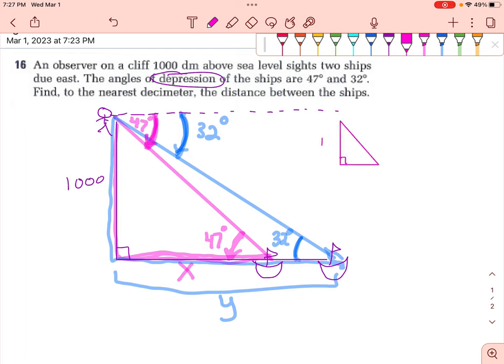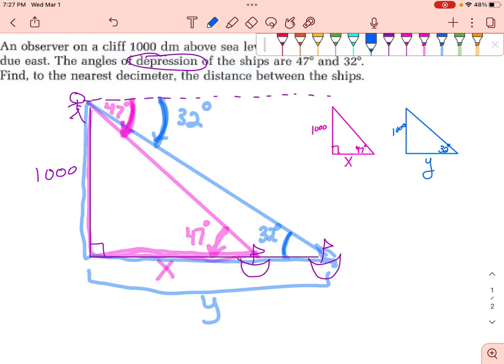So here's one of my triangles again. 1,000, 47 degrees, X. And then we have our blue triangle, and that ship is a little bit farther out. We're still 1,000 high, but this angle of depression was 32 degrees. So these are essentially our two triangles that we're going to be working with.